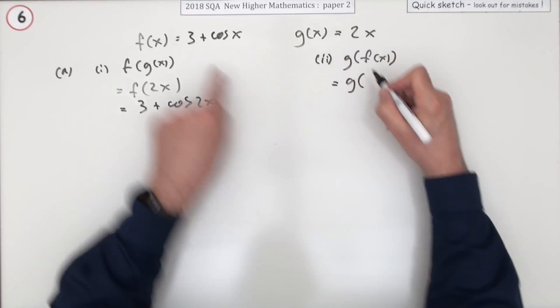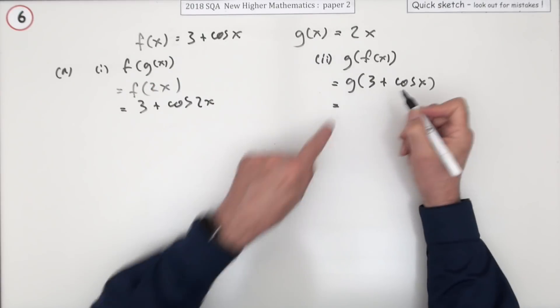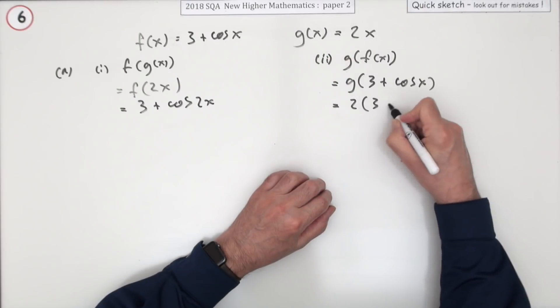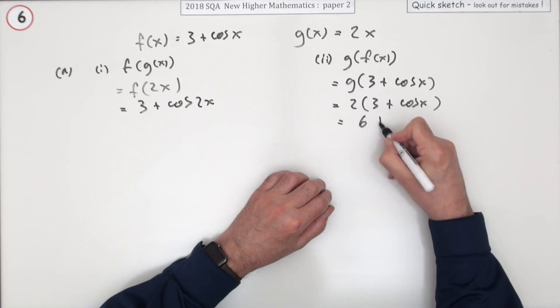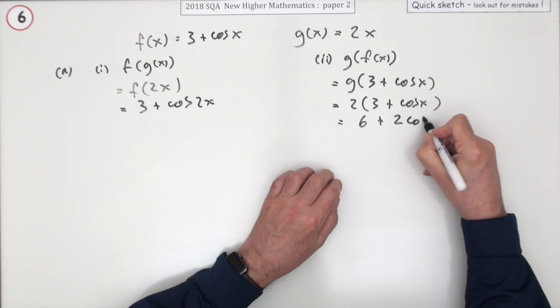g of f of x. What are you giving it? You're giving it f of x which is 3 plus cos x. What does g(x) do to anything you give it? It doubles it, so it'll be two times that, which I'll just tidy up to 6 plus 2 cos x.